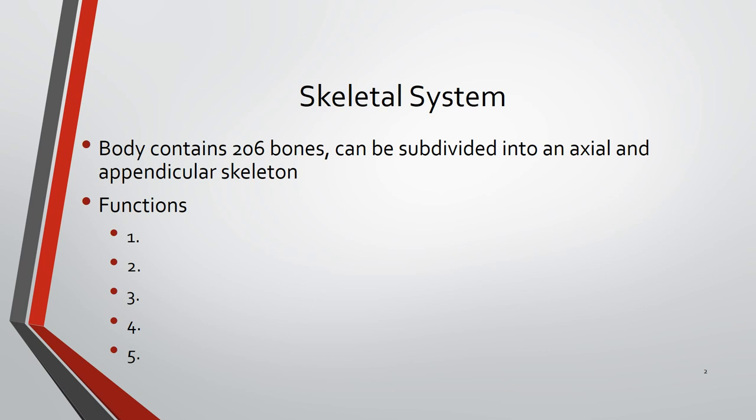Function number three is protection. Our bones play an important role in protecting our vital organs. The skull plays an essential role in protecting our brain, which we could consider the most important organ. The thoracic cavity — your rib cage — plays an important role in protecting our heart and our lungs.